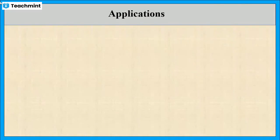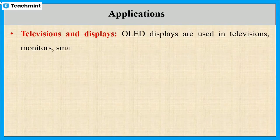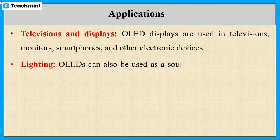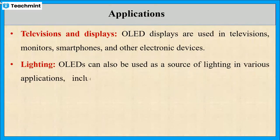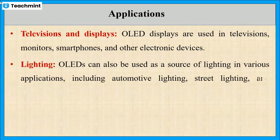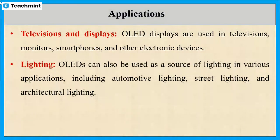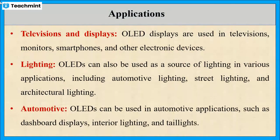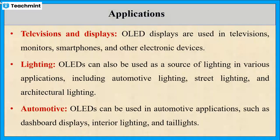Now let us see the applications of organic light emitting diodes. These are used in televisions, monitors, smartphones, etc. They are also used as a source of lighting in various applications including automotive lighting, street lighting, and architectural lighting. They are also used in automotive applications such as dashboard displays, interior lighting, and taillights.